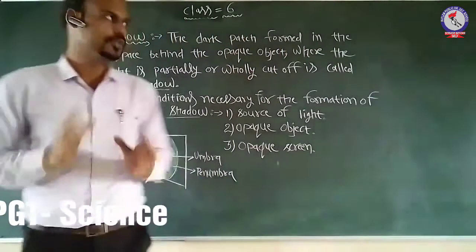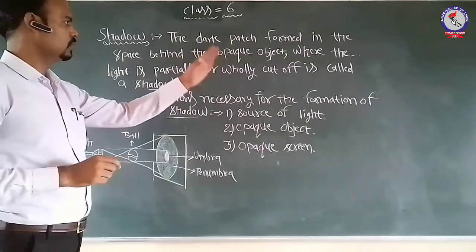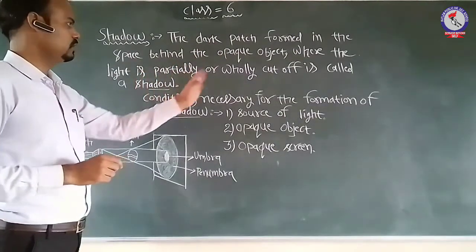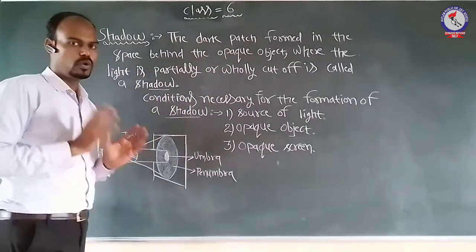of all, what is a shadow? The dark patch is formed in the space behind the opaque object where the light is partially or totally cut off. This is called a shadow.